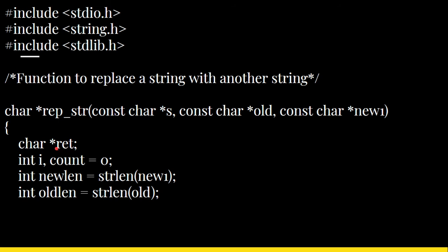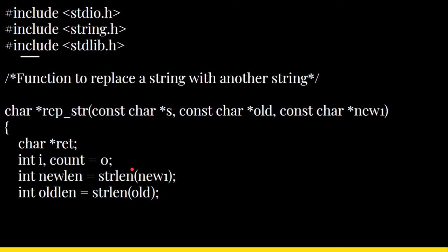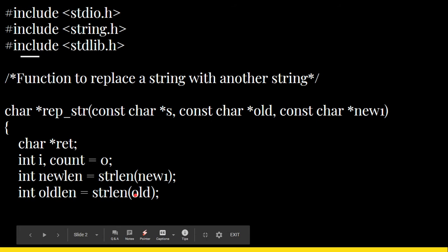Inside the function, we declare a character pointer variable ret, and two integer variables i and count initialized to zero. We also have new_length and old_length — new_length is the length of the replacement word and old_length is the length of the existing word. For example, if we replace 'old' (length 3) with 'young' (length 5), strlen is used to find these lengths.